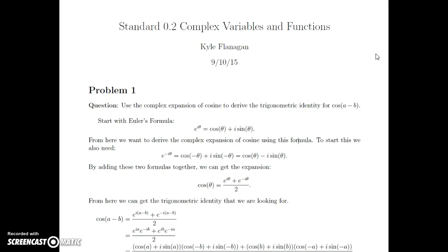But from here, we want to derive the complex expansion of cosine using this formula. So we're also going to need this one other formula, which we can get really quickly from Euler's formula. And that's e to the negative i theta and what it's equal to. And if we just plug in negative theta for theta above in Euler's formula, we get this, that cosine negative theta plus i sine negative theta is equal to e to the negative i theta.